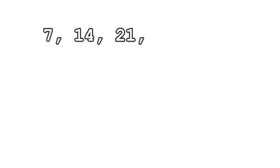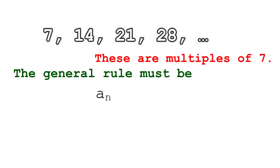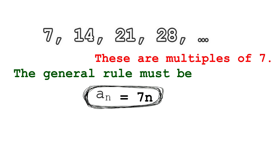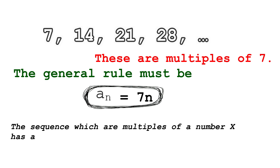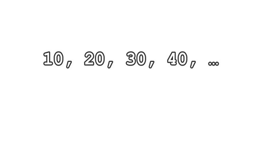How about 7, 14, 21, 28, and so on? These are multiples of 7. Therefore, the general rule must be a(n) equals 7n. Therefore, a sequence which consists of multiples of a number x has a general rule of a(n) equals x times n. So for 10, 20, 30, 40, the general rule is a(n) equals 10n.